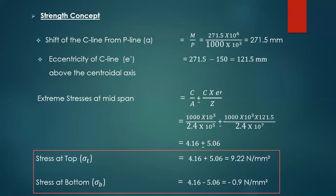The next concept is the strength concept. We use the C-line and P-line. First, calculate the shift of C-line from P-line using M/P. Moment is 271.5 × 10⁶ N·mm and pre-stressing force is 1000 × 10³ N. So the shift of C-line from P-line = 271.5 mm.